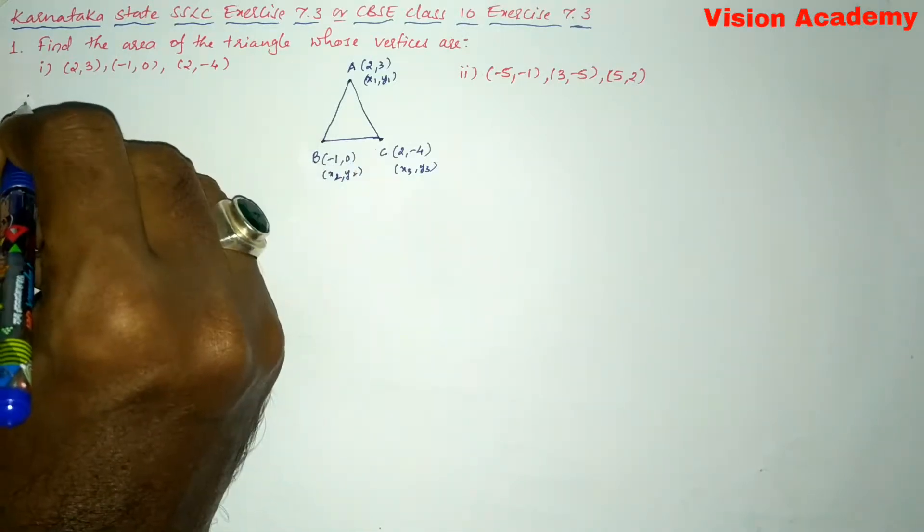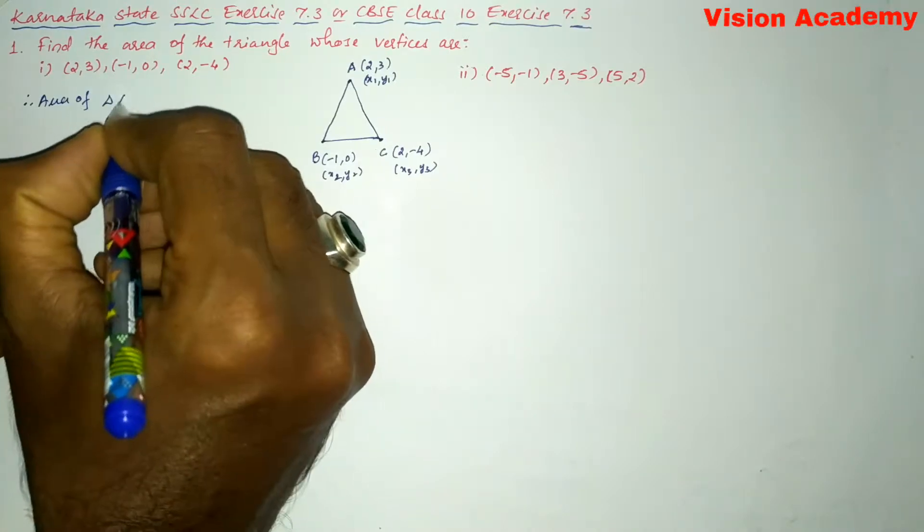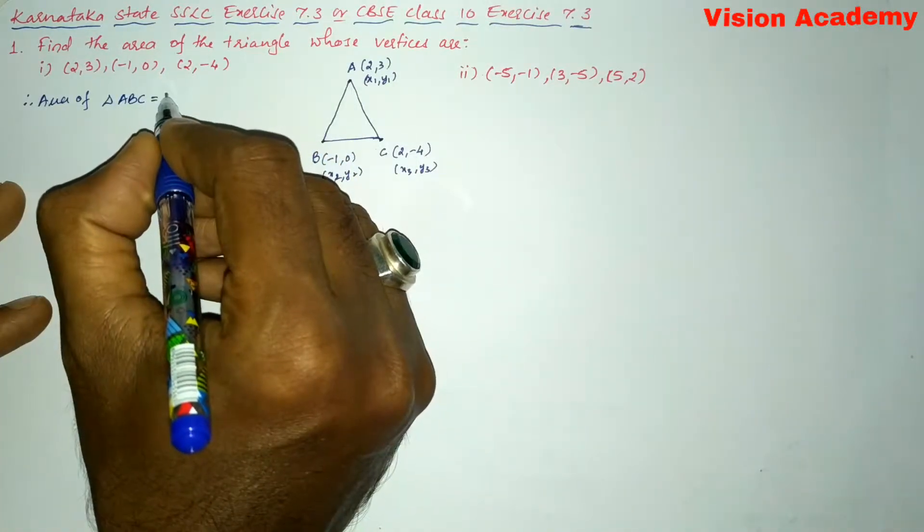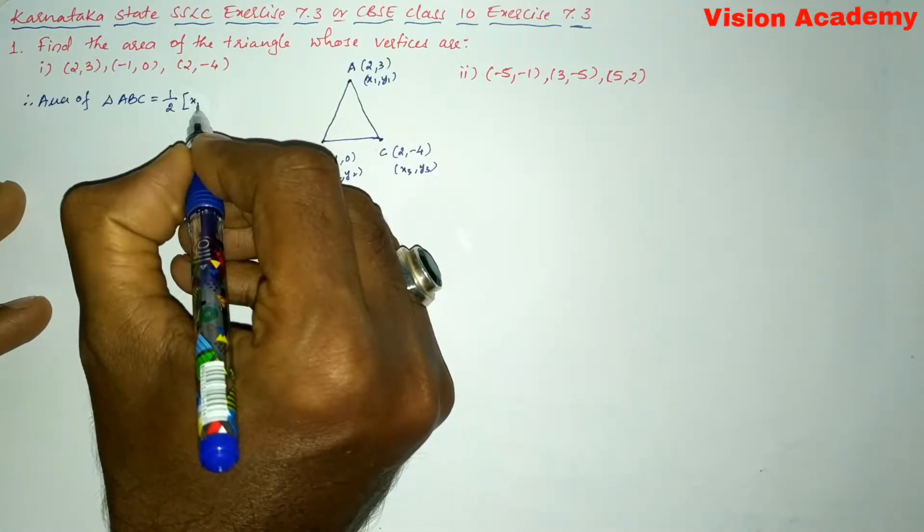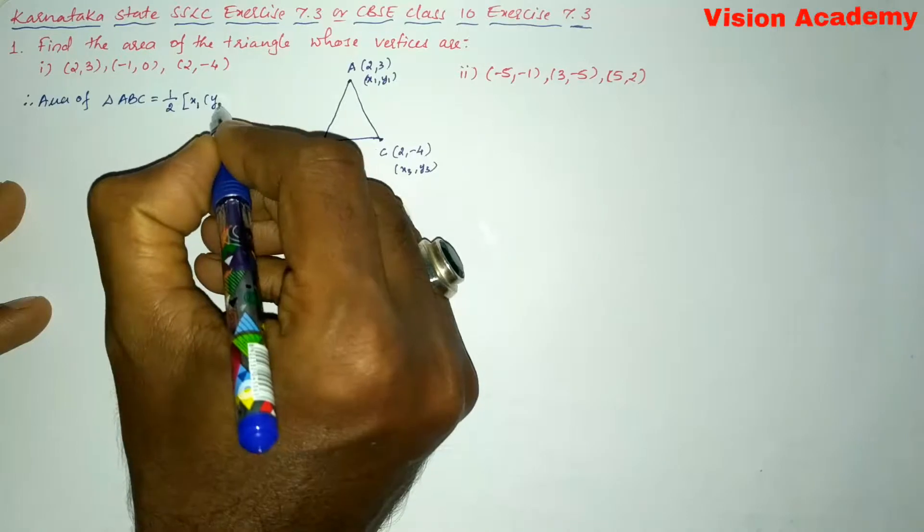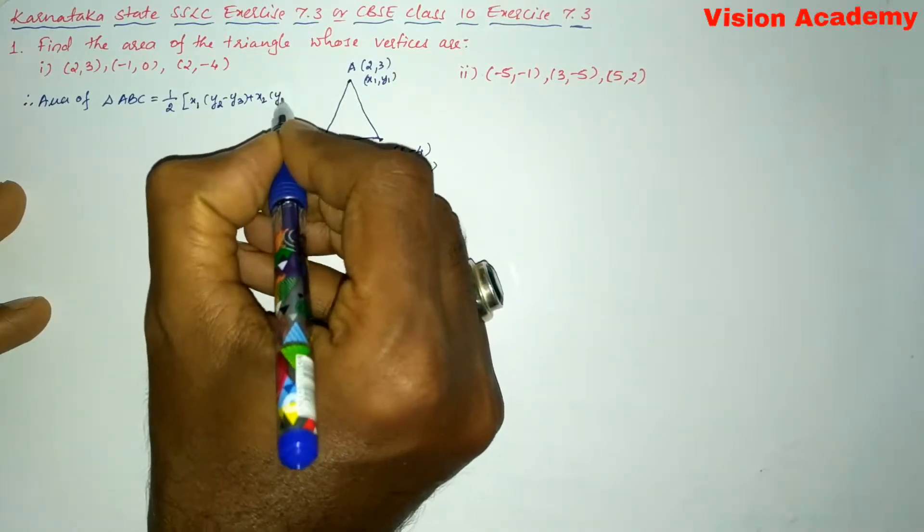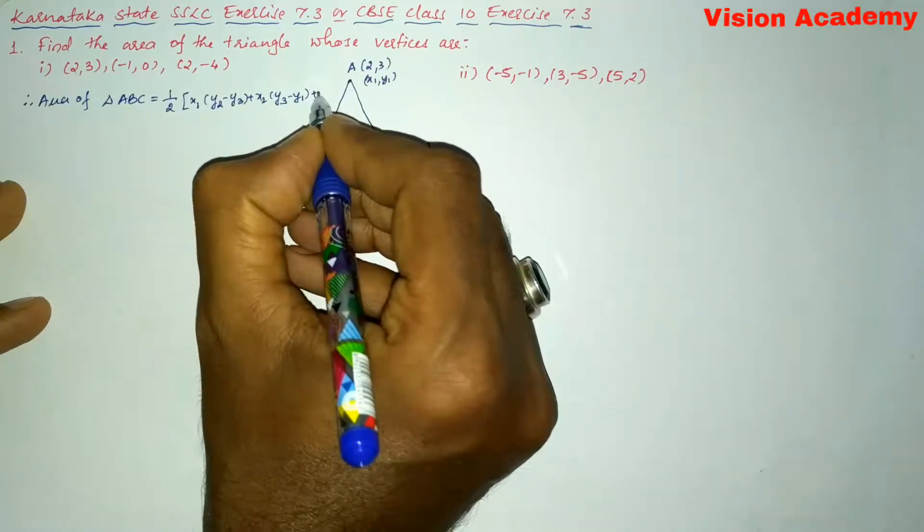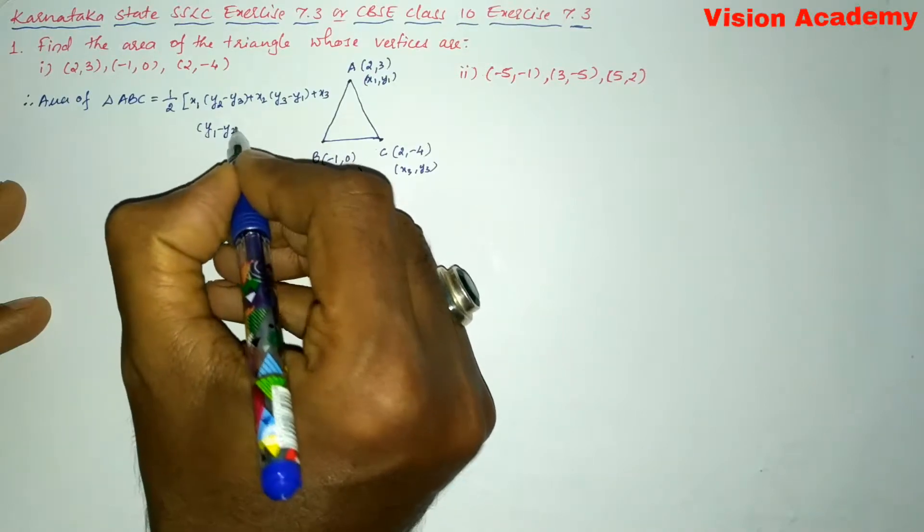we can write, therefore area of triangle ABC is equal to, we know this formula. That is 1/2 into [x1(y2-y3) + x2(y3-y1) + x3(y1-y2)].